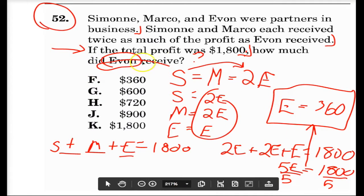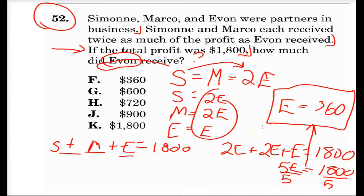But the reason we finish our problem before reading the question is because we know for sure that this is Evan. And we don't just peek and pick 360, because then we go and we read the last part of the problem which says how much did Evan receive.